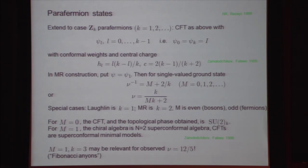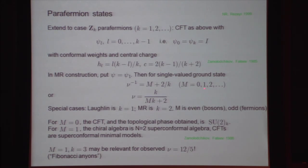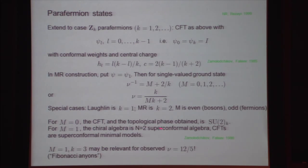This is a series of states: for k equals 1 it includes the Laughlin states, and for k equals 2 we have the Pfaffian state. m must be even for bosons and odd for fermions. Interestingly, for m equals 0, the chiral algebra is SU(2) level K connected with Chern-Simons theory of SU(2) level K. For m equals 1, it's the N equals 2 superconformal algebra and the conformal field theories are the superconformal minimal models. Since m equals 1 and k equals 1 is the Laughlin state at one-third, this means the nu equals 1/3 Laughlin state has a kind of hidden superconformal symmetry. And for m equals 1, k equals 3, this may be related to what's observed experimentally at 12/5 — sometimes referred to as the superparafermion state.